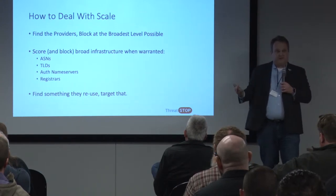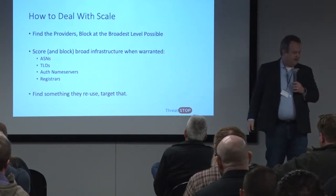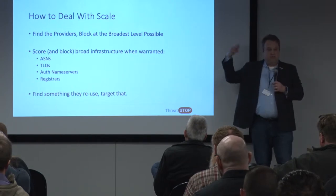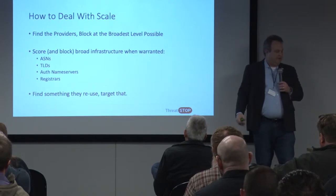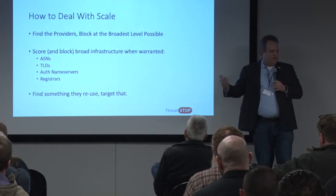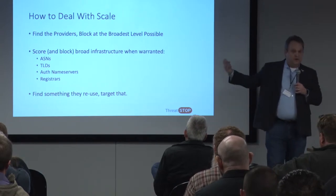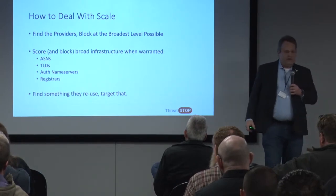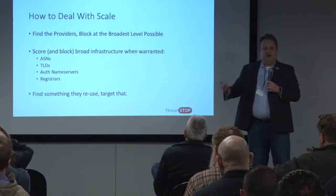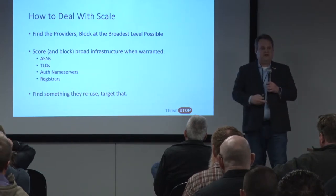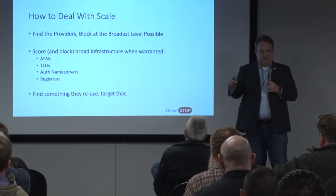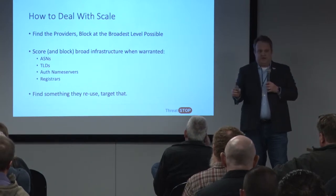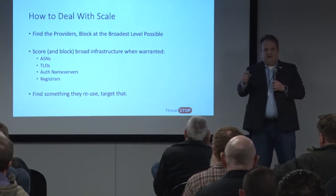Authoritative name service is something provided for a domain. One of the research projects I'm going to be doing as part of my PhD is scoring the broad infrastructure of those classes of things. This is just one small sliver of it. But ultimately, find something that the criminals reuse and target that instead. As they make changes, they're going to reuse something from previous attacks — find that and block it.